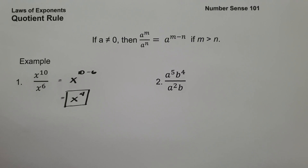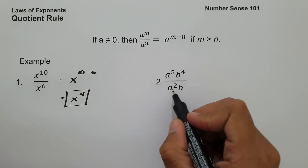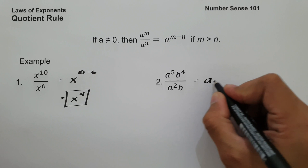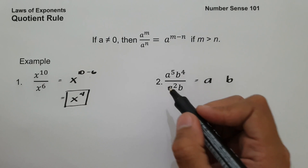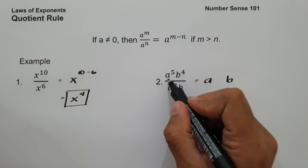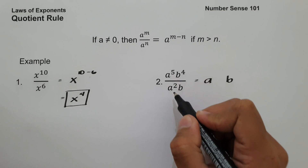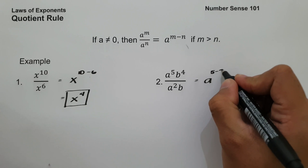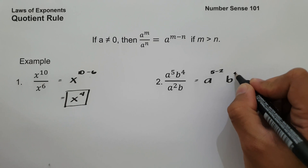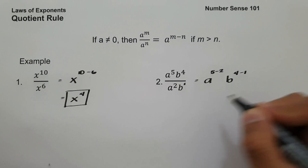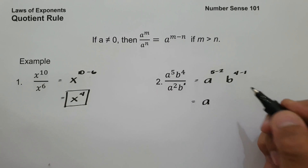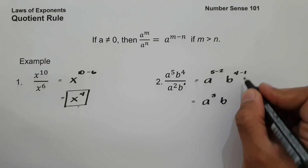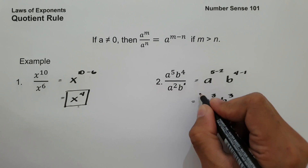On example number two, we have a raised to 5, b raised to 4, all over a squared b. To simplify, let us write base a and base b separately. The exponent of a in the numerator is 5 and in the denominator is 2, so we subtract: 5 minus 2. For b, we have 4 minus 1. This gives us a raised to 3 and b raised to 3. And this will be our answer.